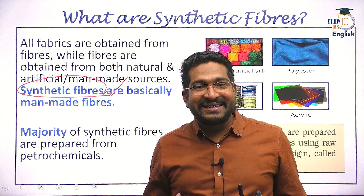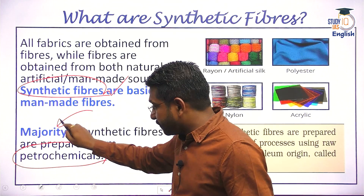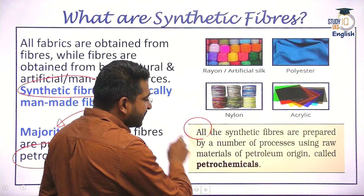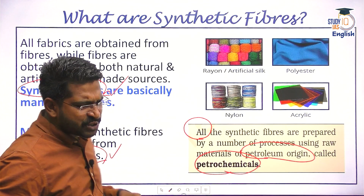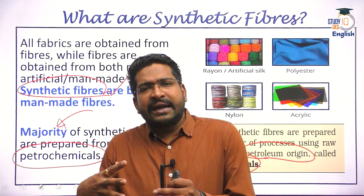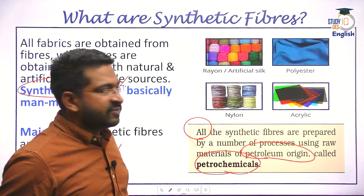Please remember, majority of synthetic fibers are prepared from petroleum-based chemicals, that is petrochemicals. Although NCRT highlights that all synthetic fibers are prepared using raw materials of petrochemical origin, I have written 'majority' because there are some fibers not exactly from petrochemicals — for example, we even create fibers from wood pulp, which is not a petroleum-based source. That's why I've written majority here. We'll be talking about them in some time.